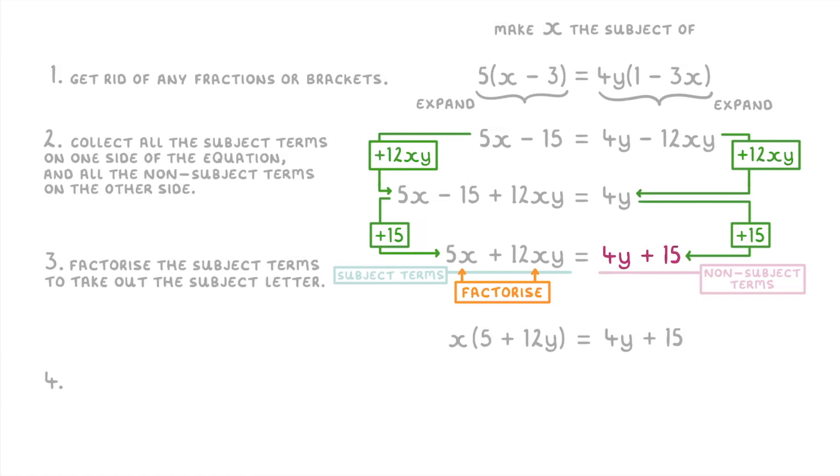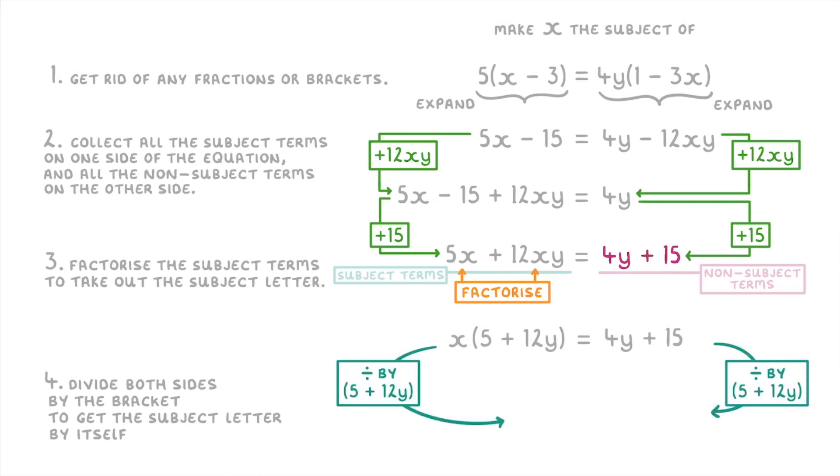Then finally the very last step that we have to do is to divide both sides by the bracket that we just formed to get the subject letter by itself. So in this case that means divide both sides by the 5 plus 12y to get x by itself on the left equaling 4y plus 15 over 5 plus 12y. And at this point we don't really need these brackets anymore, so we can get rid of them and this here is our final answer, as we've now rearranged it all so that x is the subject of our equation.